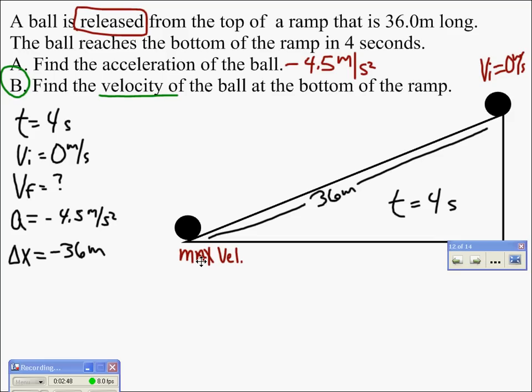So if I look at my variable list, since I'm looking for the final velocity, seems like the easiest one for me to use is Vf squared equals the initial velocity squared plus 2a delta x, or 2 times a times the displacement. So that's the equation we're going to use and it's all set up ready to go.